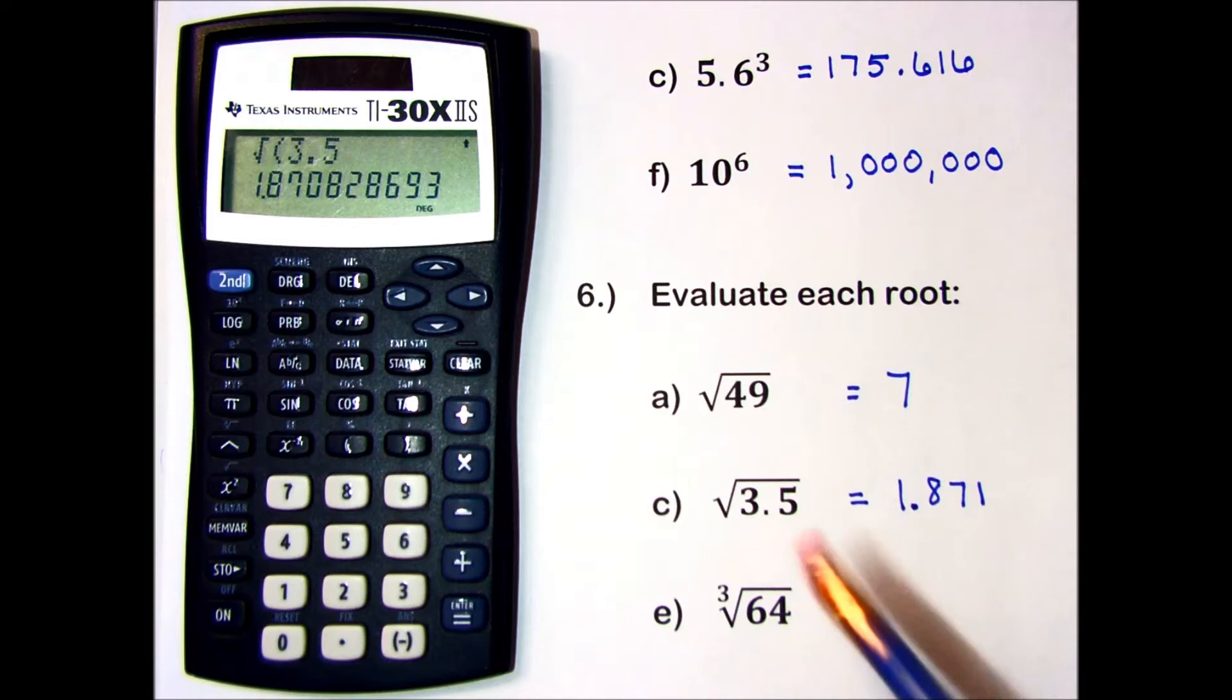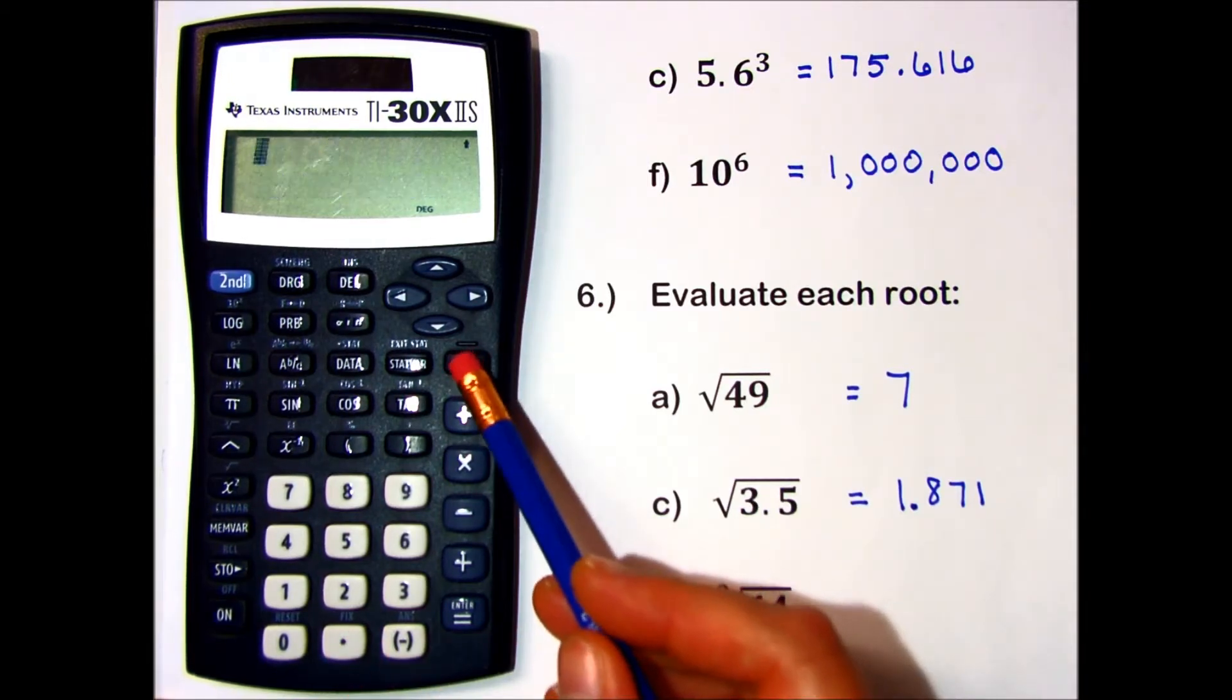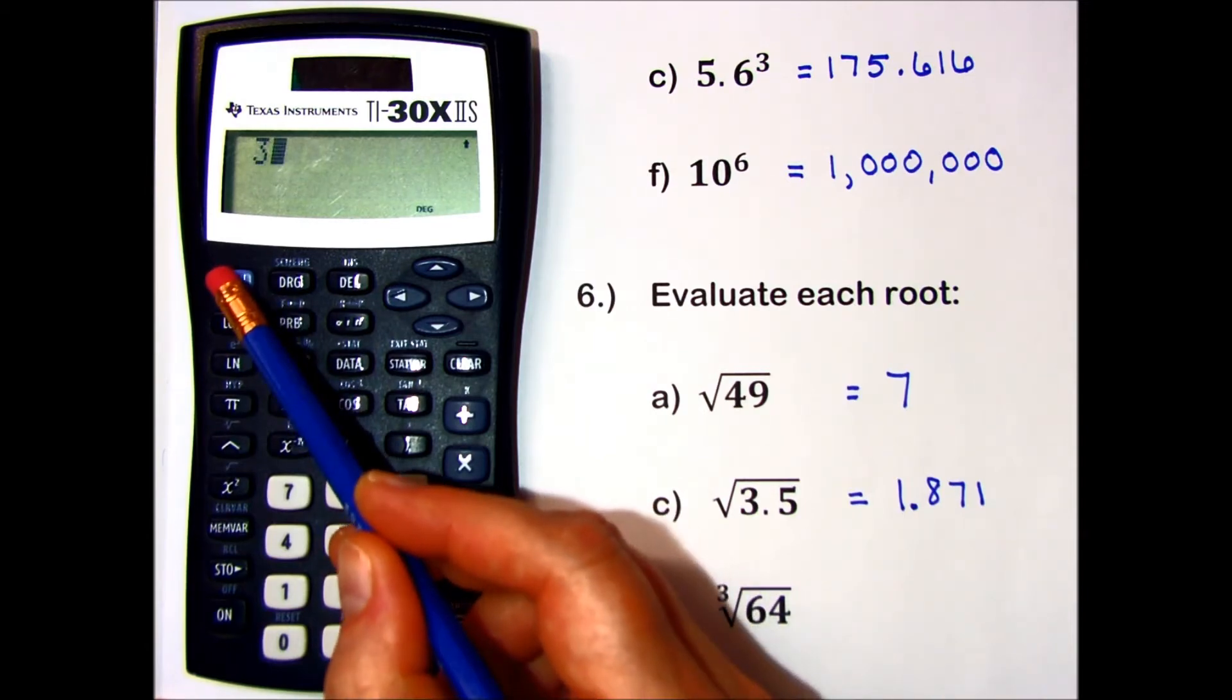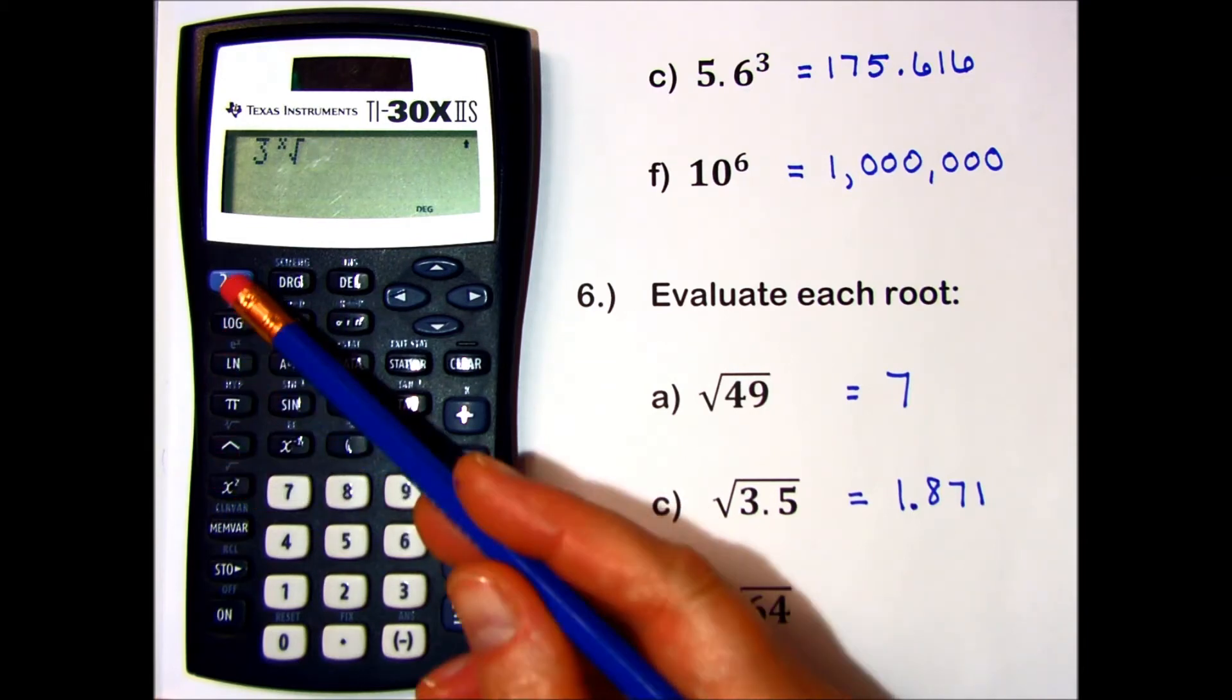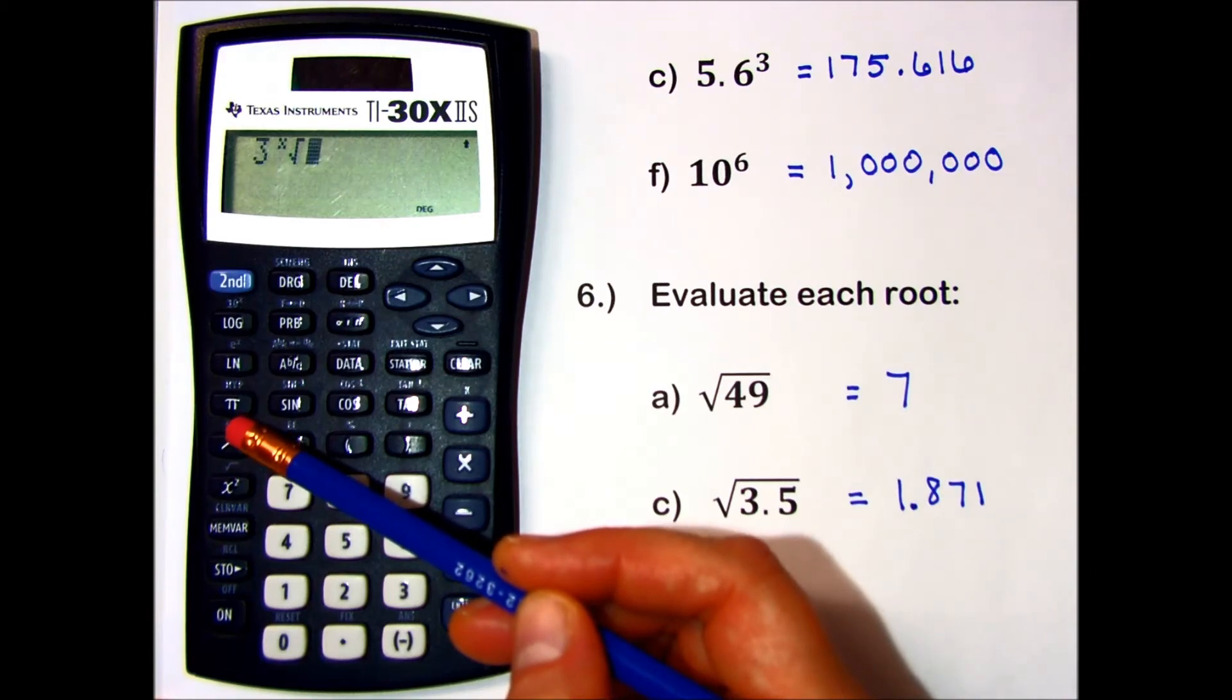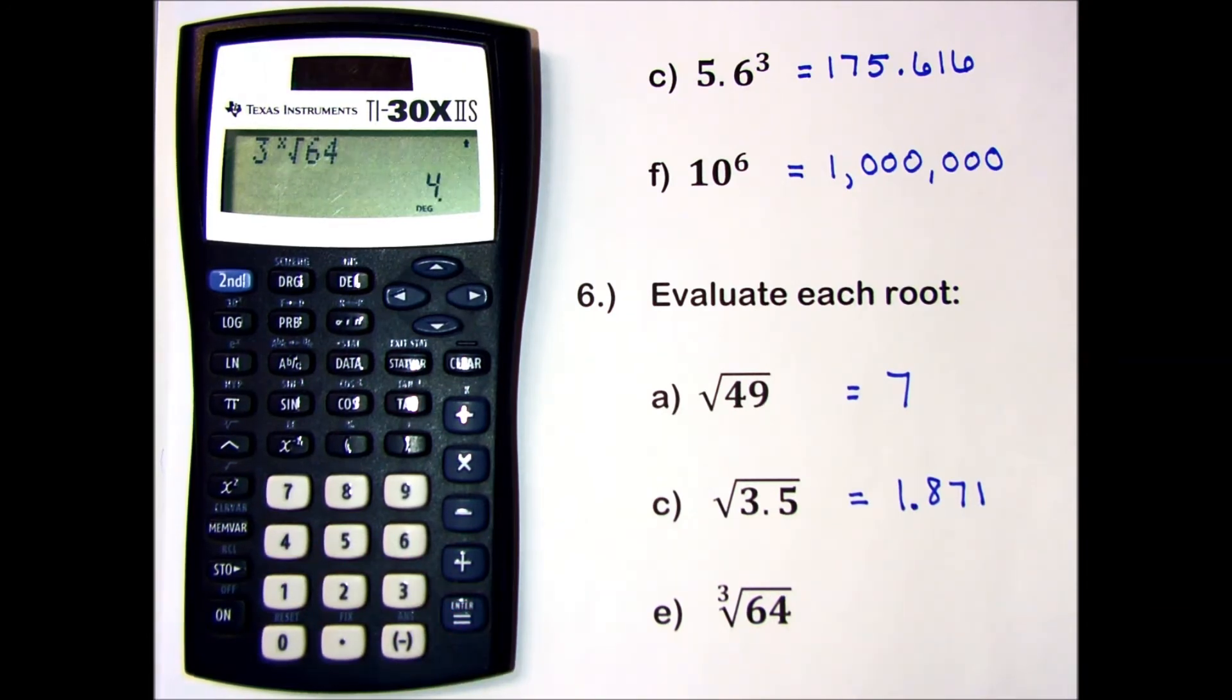One more, a cube root. This calculator does not have a cube root button, but I can use a variable root button. To enter that, I first put the index of the root, which is 3, and then say root. I press the 2nd function of my exponent key and tap into a little variable root function. Cube root of 64, and the answer is 4.